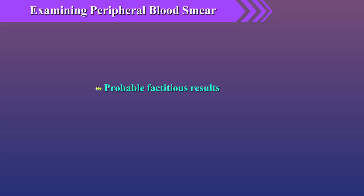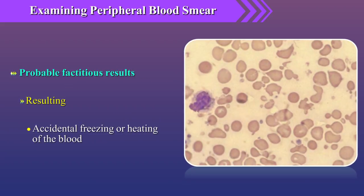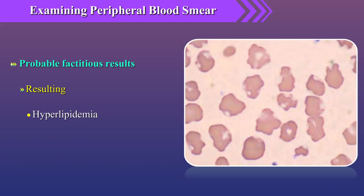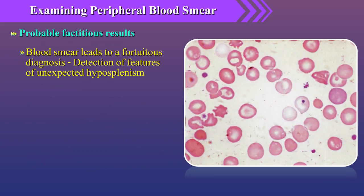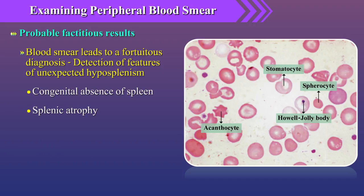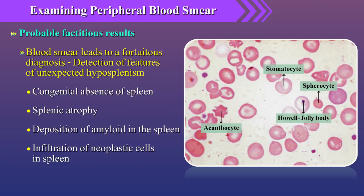Apart from what has been discussed, highly improbable results may be factitious, resulting from accidental freezing or heating of the blood, from hyperlipidemia, or from presence of cold blood agglutinins, cryoglobulin, bacteria, or fungi. Occasionally, the blood smear leads to a fortuitous diagnosis that can be very important to the patient, such as detection of features of unexplained hyposplenism, which may suggest congenital absence of spleen, splenic atrophy, deposition of amyloid in the spleen, infiltration of neoplastic cells in the spleen, or even a splenectomy of which the patient is unaware — in each case putting the patient at risk for complications of hyposplenism.